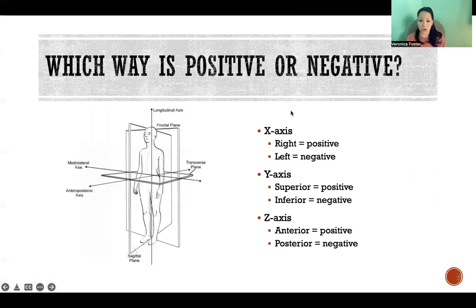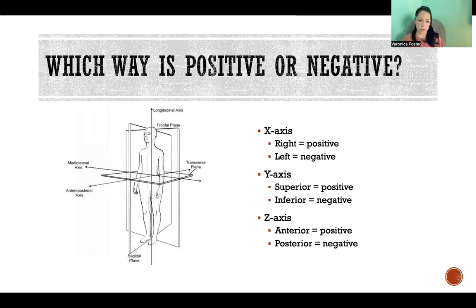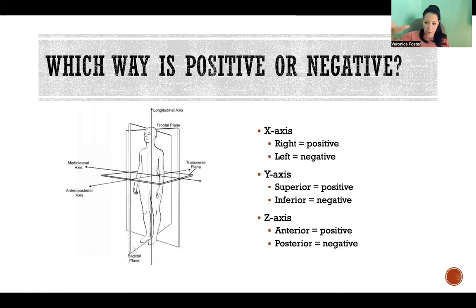So which way is positive or negative? If we're looking at the X-axis — the medial-lateral axis — right is positive and left is negative. If we're looking at the Y-axis, then superior is positive and inferior is negative. For the Z-axis, anterior is positive and posterior is negative. As long as you're wrapping your fingers in the correct direction around the correct axis, your right thumb will point in the appropriate direction and you can determine positive or negative.